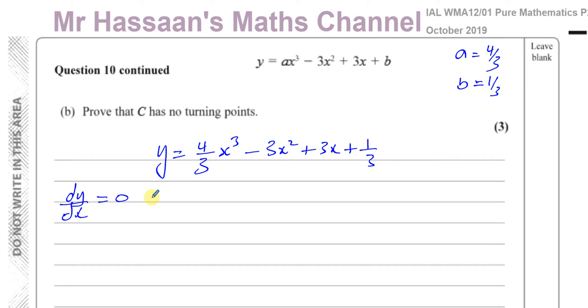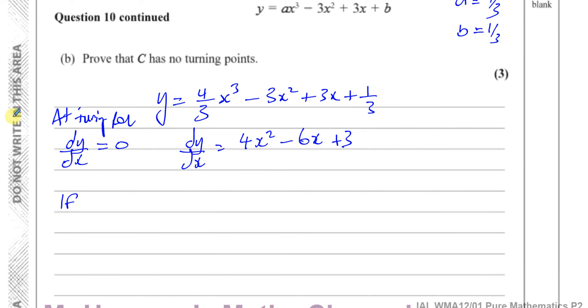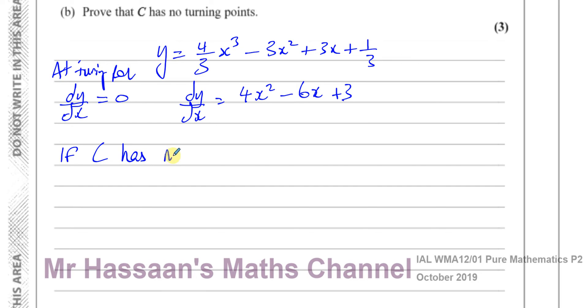So if this curve has no turning points, then there will be nowhere on this curve where the gradient will reach 0. So let's first of all find what dy/dx is with the values of A and B here now. It's going to be 3 times 4 over 3, which is 4X squared, then minus 6X and plus 3. So basically, at the turning point, dy/dx equals 0.